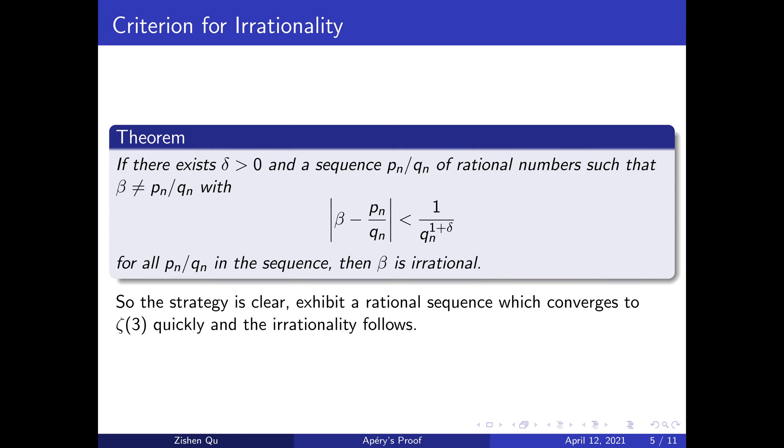One of these is the irrationality criteria that follows from a Diophantine approximation theorem of Dirichlet. The theorem states that if there exists a δ > 0 and an infinite sequence of rational numbers such that the distance between β and the rational number is less than 1 over the denominator to the power of 1+δ, then β is irrational.